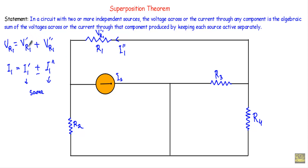The condition for Vr1 prime plus Vr1 double prime is that they have to share the same polarity — in both cases they must share the plus and minus at the same terminals. If they share opposite polarity, then I will subtract Vr1 double prime from Vr1 prime. This is the statement of Superposition Theorem.